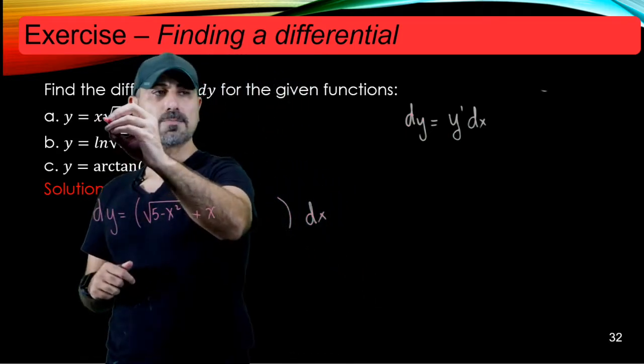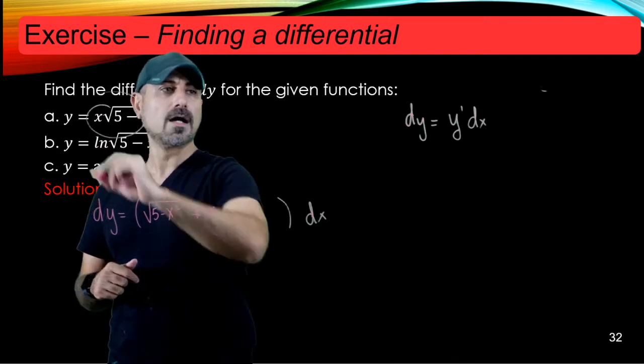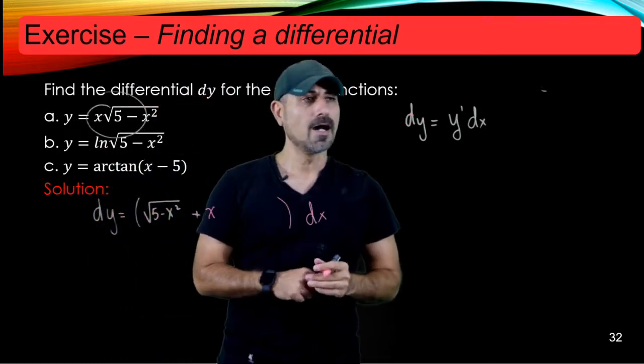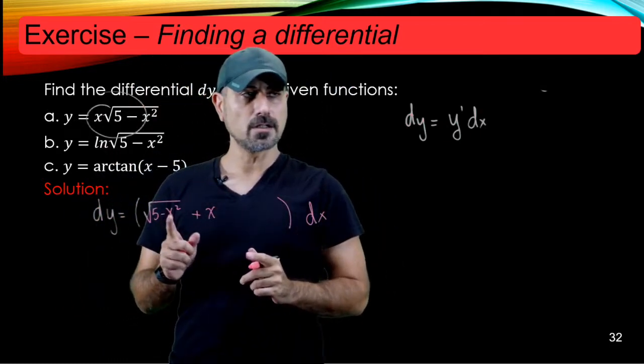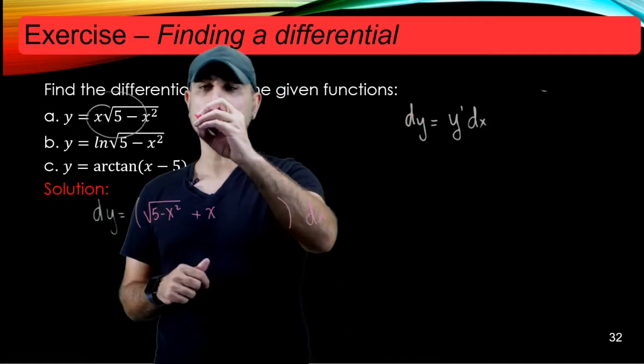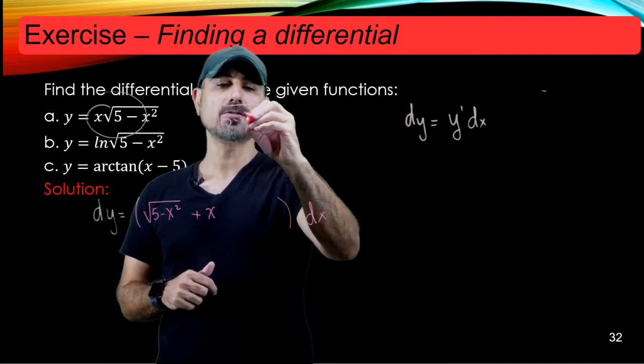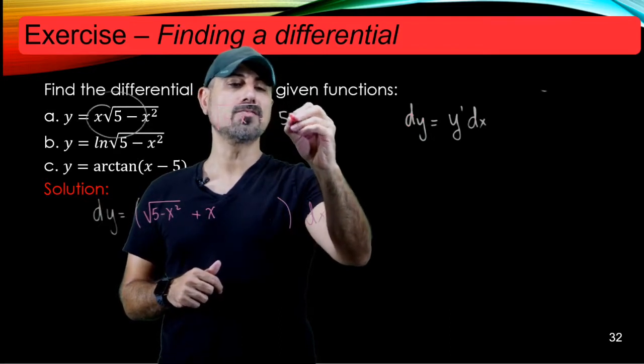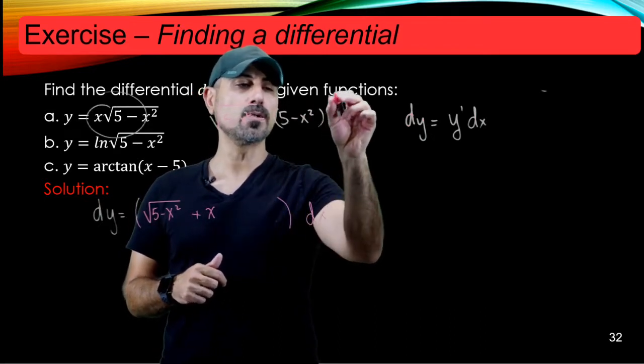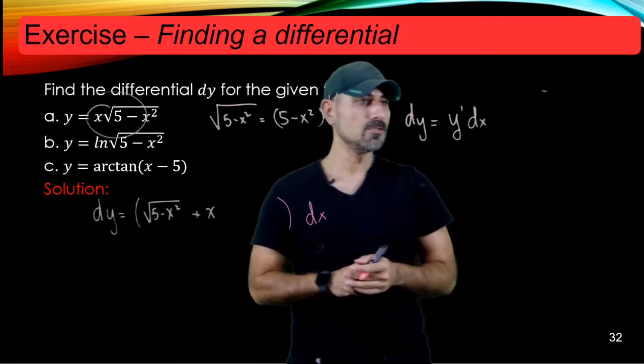But I think it's better to write 5 minus x squared in the square root sign to be - I'll just write it here - so 5 minus x squared is essentially equal to 5 minus x squared to the power of 1 half. So that allows me to use the chain rule.